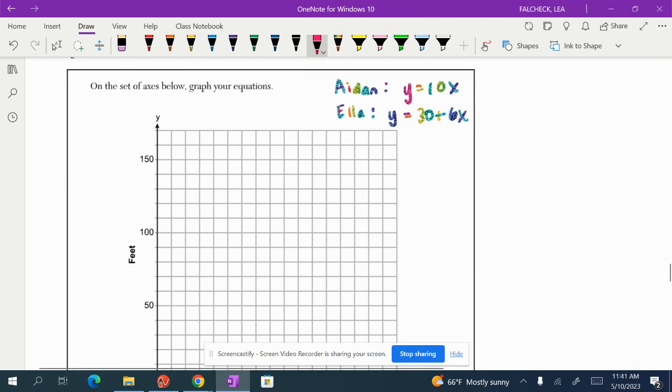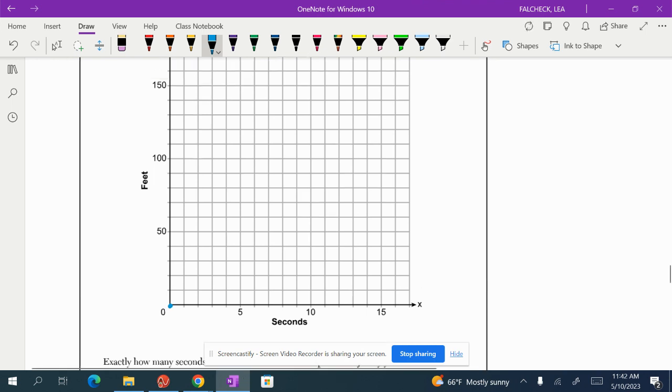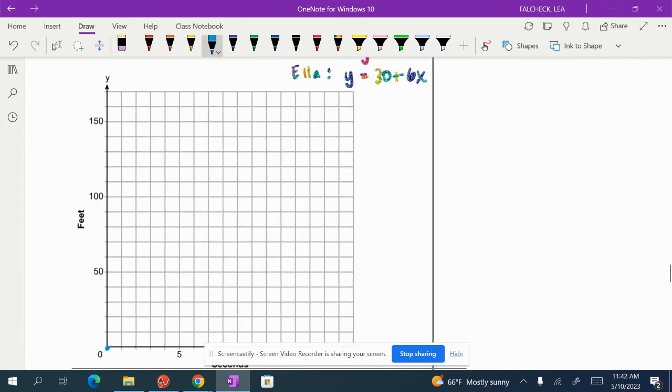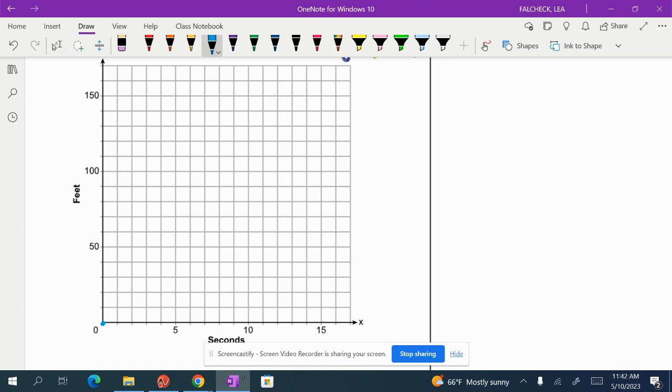So Aiden, he has a y-intercept of zero and then a slope of 10. Actually, if we're keeping with blue and pink, I'm going to do Aiden in blue. So we have 0, 0 and then 1, 2, 3, 4, 5, 6, 7, 8, 9, 10. Oh wait, I just committed a cardinal mistake here. Look at the axes. Look at the y-axis. Each box is represented by 10 feet. So this slope is actually just going up one box, right? Because this is 10, 20, 30, 40. You got to always read the problem, right?